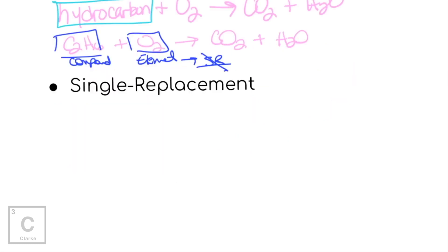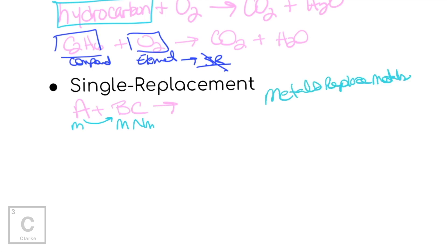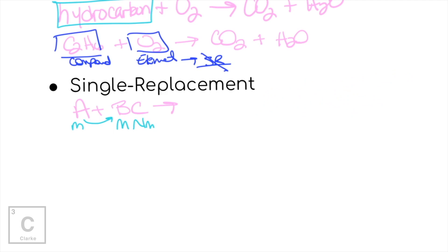Let's look at single replacement — one thing is going to be replaced. The general formula is A + BC → products. The single element A will kick out either B or C. If A is a metal, it kicks out the metal in the compound, because metals always replace metals and non-metals always kick out other non-metals. Ionic compounds are always composed of metals and non-metals. So if A is a metal, it kicks out B, the other metal, and A gets with C.